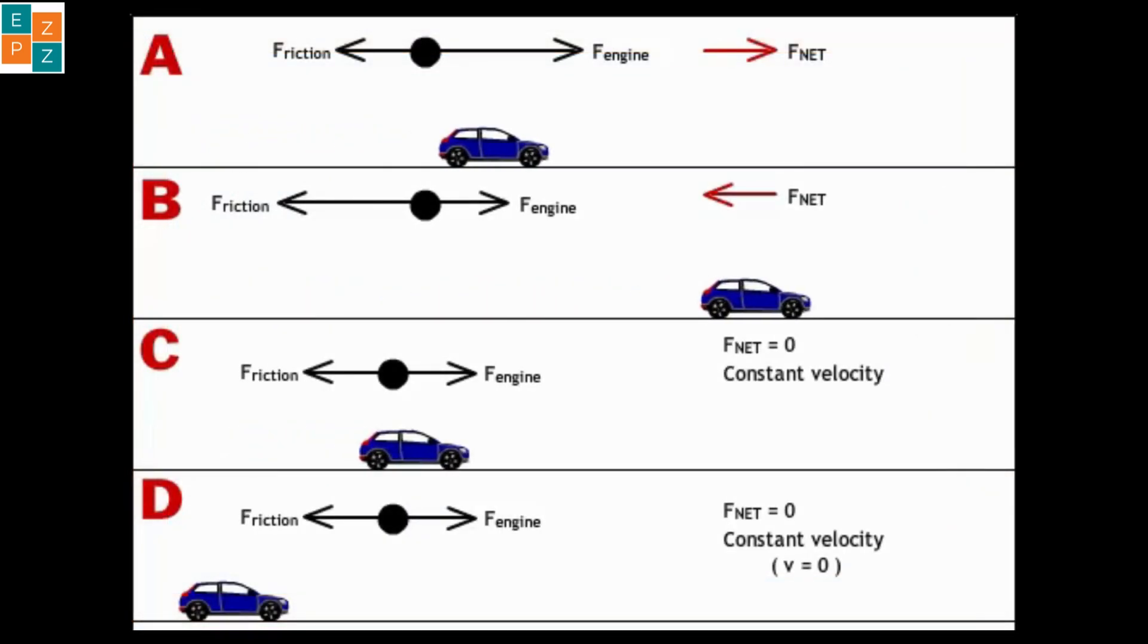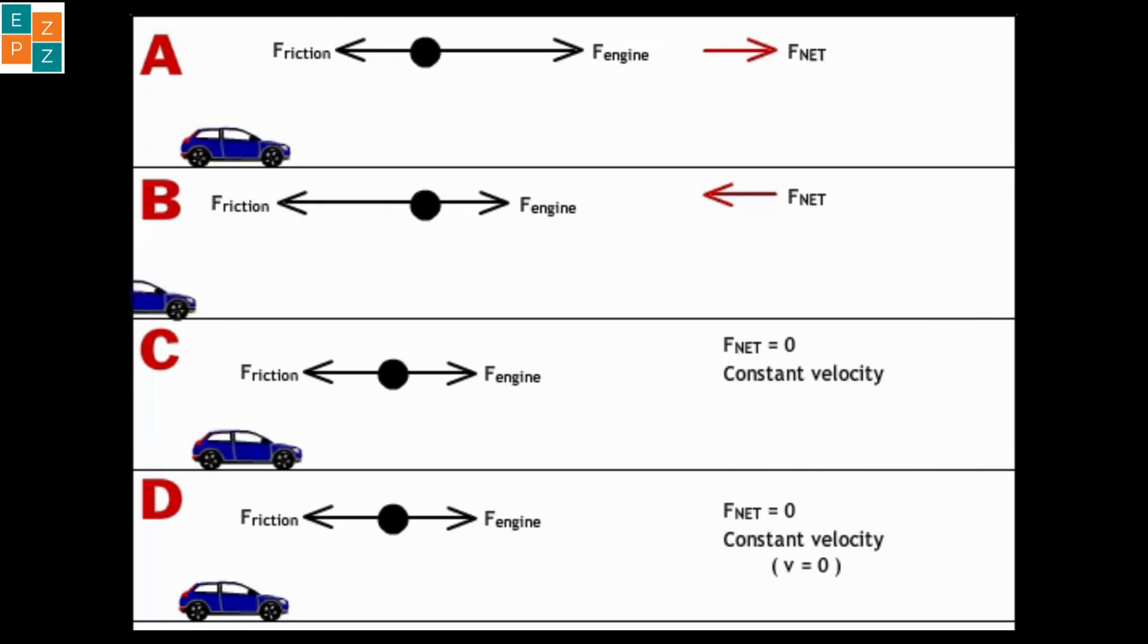Let's break down free body diagrams for a car in four different scenarios: at rest, moving at constant velocity, speeding up, and slowing down.